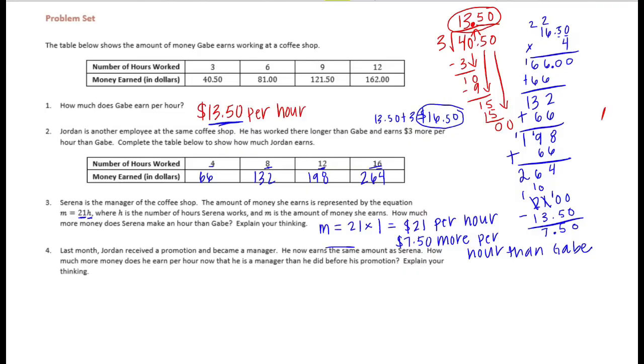Number 4, last month Jordan received a promotion and became a manager. He now earns the same amount as Serena. How much more money does he earn per hour now that he is a manager than he did before his promotion? Explain your thinking. So he's now making the same amount as Serena. So now he's making $21 per hour.